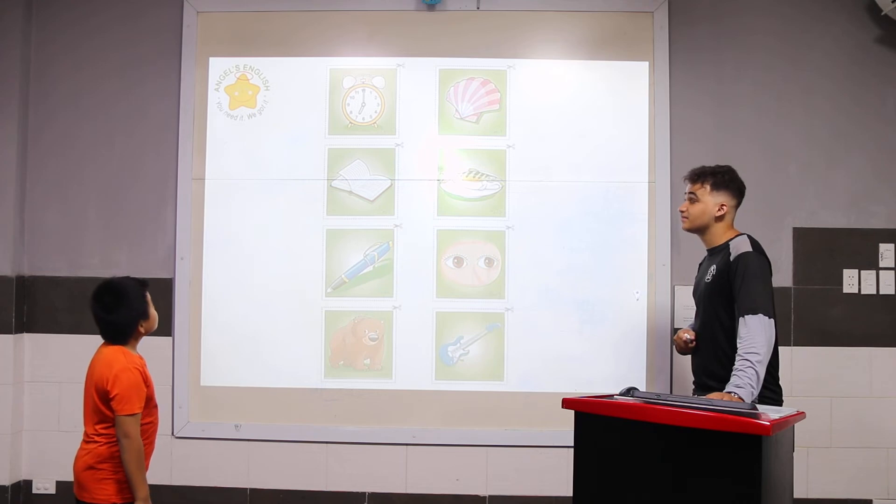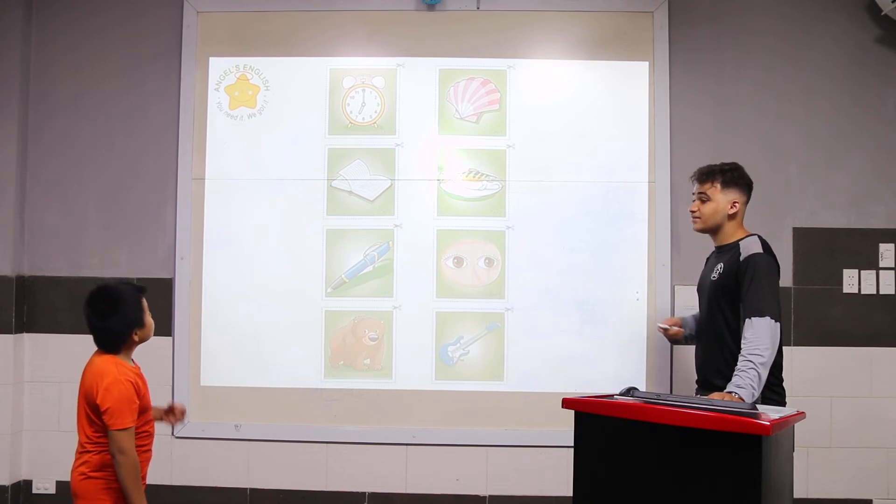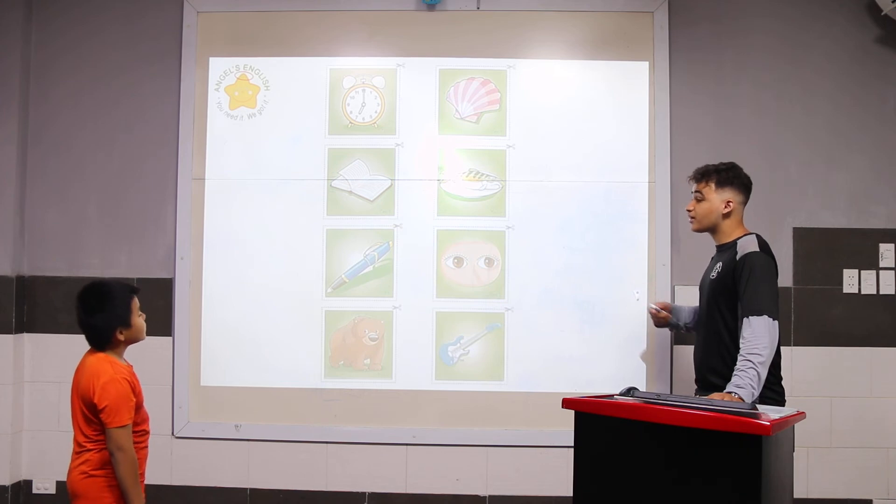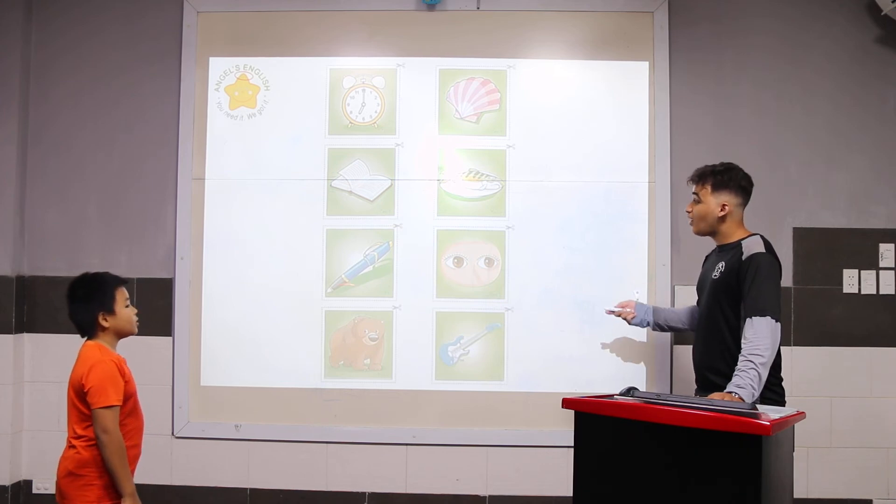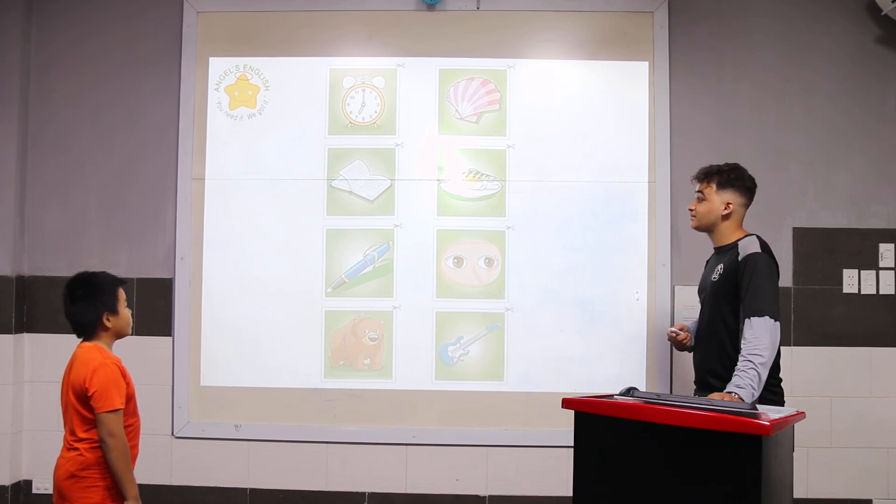What time is it? It's 7 o'clock. Excellent. What is it? It's a book. What can you do with a book? I can write a book. What is it? It's a pen. What can you do with a pen? I can write a pen.